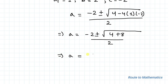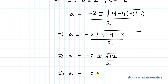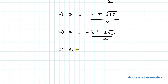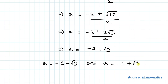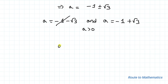This implies a equals minus 2 plus or minus root 12, divided by 2. Taking 2 as common, this gives a equals minus 1 plus or minus root 3. So we get two values: a equals minus 1 minus root 3, and a equals minus 1 plus root 3. Since a must be greater than 0, the negative value is discarded, so a equals root 3 minus 1.